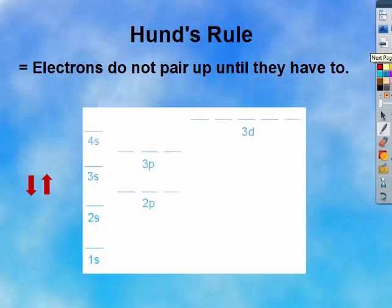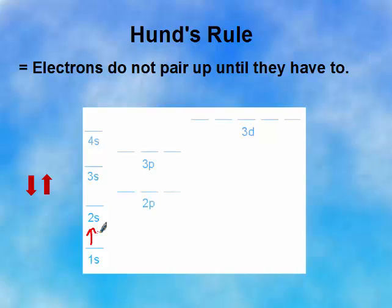And finally, Hund's rule says electrons do not pair up until they have to. If electrons were entering this orbital diagram, first they would enter the 1s, and I can fit two electrons in there. When the electrons pair up, they're going to have opposite spins. Because electrons do repel, that opposite spin minimizes some of that repulsion.